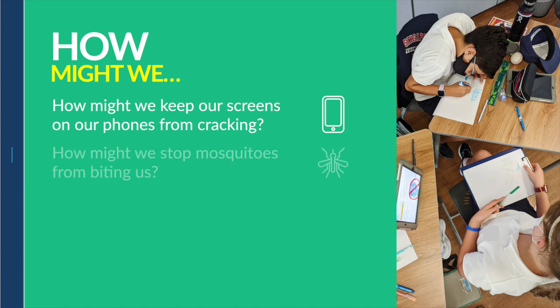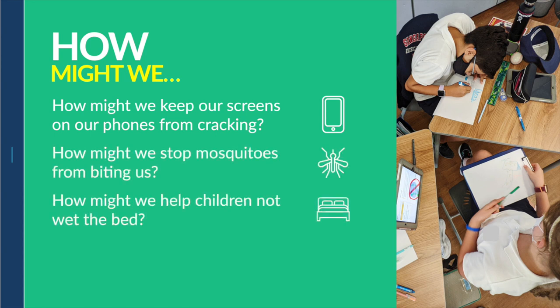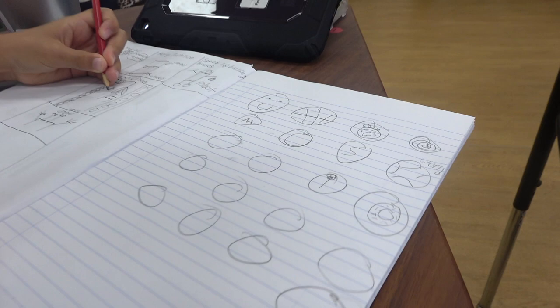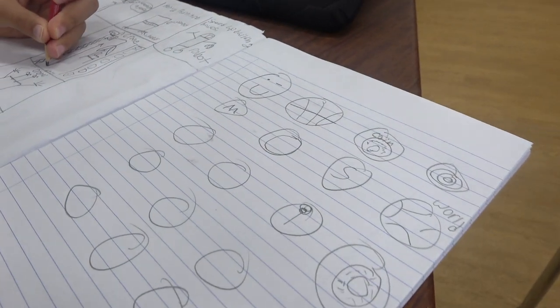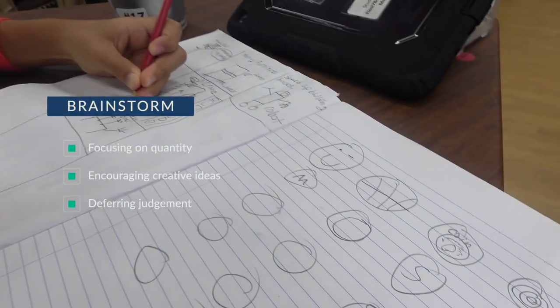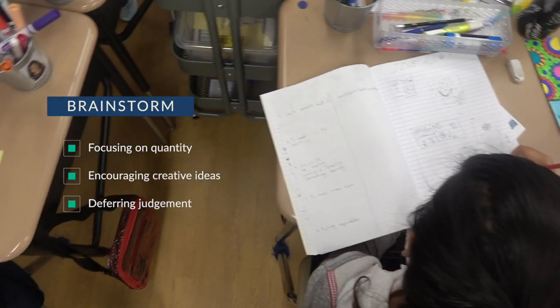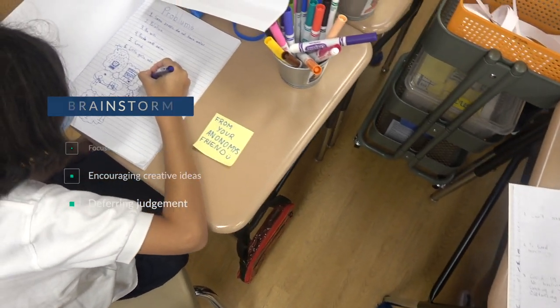How might we stop mosquitoes from biting us? How might we help children not wet the bed? How might we help people who can't swim enjoy the pool? They then started to brainstorm ways of answering their how-might-we questions, focusing on quantity, encouraging creative ideas, and deferring judgment.